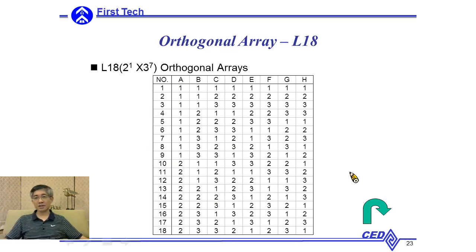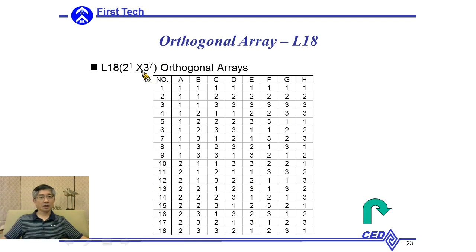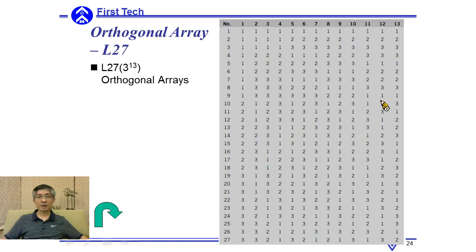L18 is a very different orthogonal array compared with the previous ones because it is a mixed array. It has 18 experiments and contains one two-level factor arranged in the first column, and seven three-level factors from B to H. L27 can be used for 13 three-level factors.